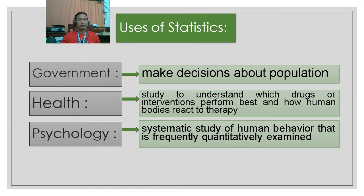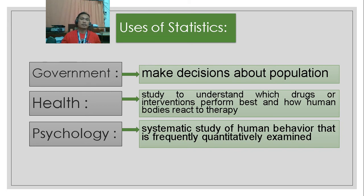The three entities are: the government, health, and psychology. In the government, they use statistics to make decisions. For example, about the population — they collect data about population, they use that data, organize that data, and after organizing it, they make decisions.